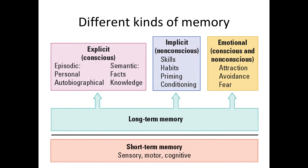We have different kinds of memory: short-term memory and long-term memory. Long-term memory can be divided into three subparts: explicit or conscious long-term memory, implicit long-term memory which is non-conscious, and emotional long-term memory which can be both conscious and non-conscious. Explicit memory can be further split into episodic memory and semantic memory.